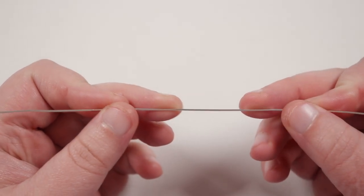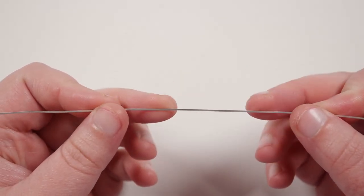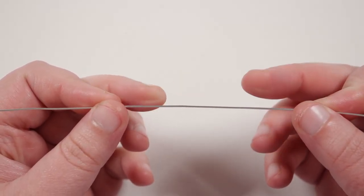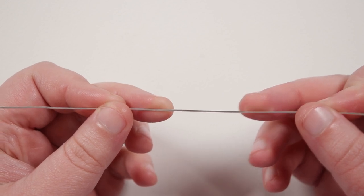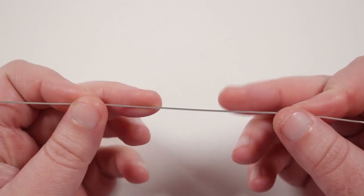So we then need to cut a length of wire and really is whatever you're comfortable working with. Usually I use about 40 centimeters or so and I use that length for multiple links. This time I'm just using a shorter length just for the sake of the video.